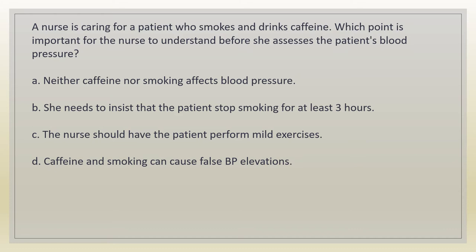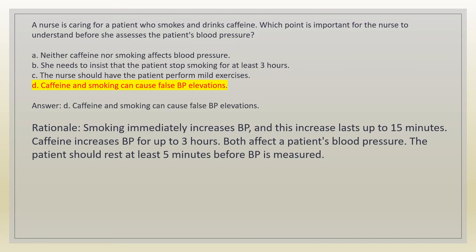A nurse is caring for a patient who smokes and drinks caffeine. Which point is important for the nurse to understand before assessing the patient's blood pressure? A. Neither caffeine nor smoking affects blood pressure. B. She needs to insist that the patient stop smoking for at least 3 hours. C. The nurse should have the patient perform mild exercises. D. Caffeine and smoking can cause false BP elevations. Answer: D. Rationale: smoking immediately increases BP and this increase lasts up to 15 minutes. Caffeine increases BP for up to 3 hours. The patient should rest at least 5 minutes before BP is measured.